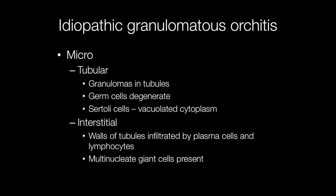Histologically, the seminiferous tubules show germ cell degeneration and the Sertoli cells, which are the supporting cells around the periphery of the tubules, have a vacuolated cytoplasm, and the tubules contain a granulomatous inflammatory infiltrate. The interstitial aspect of the testis shows a lymphoplasmacytic infiltrate with lymphocytes and plasma cells infiltrating the walls of the tubules.